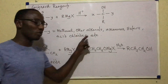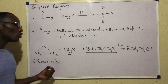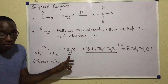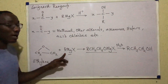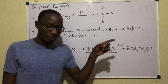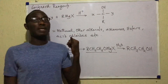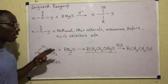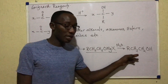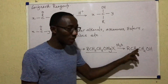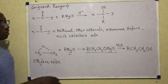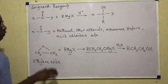The interesting and unique thing about this method is that the primary alcohol you get will usually have two carbon atoms more than the Grignard reagent you start with. So if I have a Grignard reagent with four carbon atoms, the alcohol I get will be primary and will have six carbons — two more than the Grignard reagent.